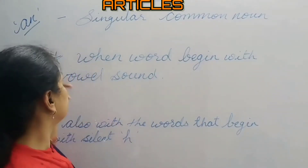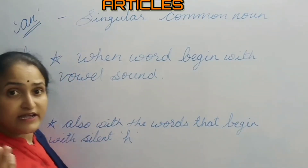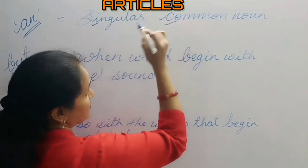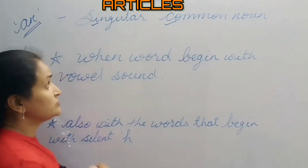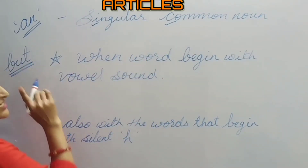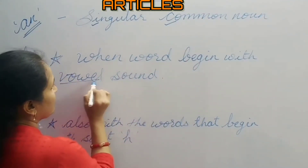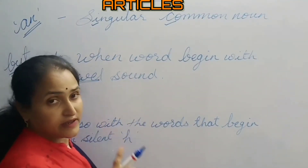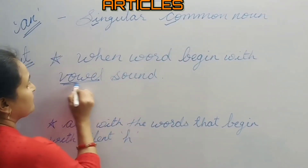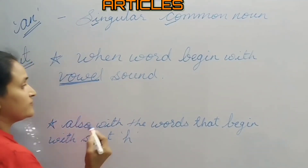Now we will see the rule to use article 'an'. Article 'an' is also used with a singular common noun, but the condition is that the word should begin with a vowel sound.